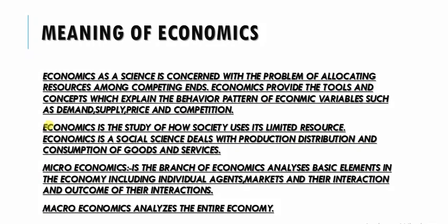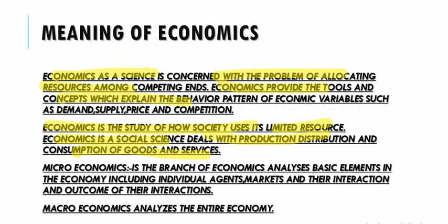Now we will understand the meaning of economics. Economics is the study of how society uses its limited resources. The economy has limited resources — at the individual level and at the economy level, everybody has limited resources. Economics is a social science that deals with the production, distribution, and consumption of goods and services. It is a science concerned with the problem of allocating limited resources among different competing ends, and it provides tools and concepts which explain the behavior of economic variables such as demand, supply, price, and competition.